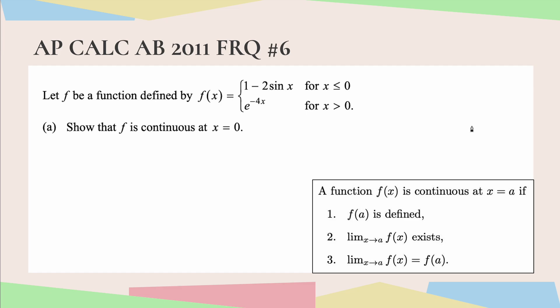All right, let f be a function defined by f of x equals 1 minus 2 sine x for x less than or equal to 0, and e to the negative 4x for x greater than 0. Part A asks us to show that f is continuous at x equals 0.